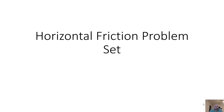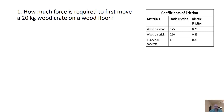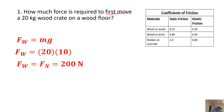This is the horizontal friction problem set to do after your force friction lesson. First question: how much force is required to move a 20 kilogram wood crate on a wood floor? We're looking at wood on wood, and it says first move, so we're going to go for static friction. We have to figure out the weight, which is mass times gravity, ending up being 200 newtons. The normal force is equal to that because it's just a horizontal surface.